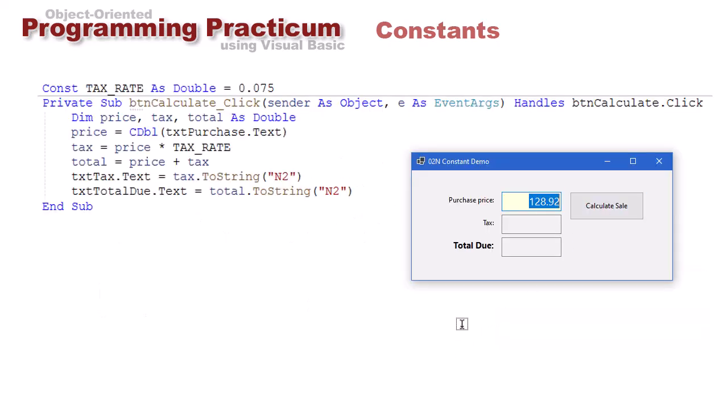Let's take a look at an example. I have a text box here named TXT purchase. The user enters a value of something they're purchasing, and then they click the calculate sale button. What this button does, it takes the value of TXT purchase text property, saves that as a double value, and then multiplies it by the tax rate, which is a constant.